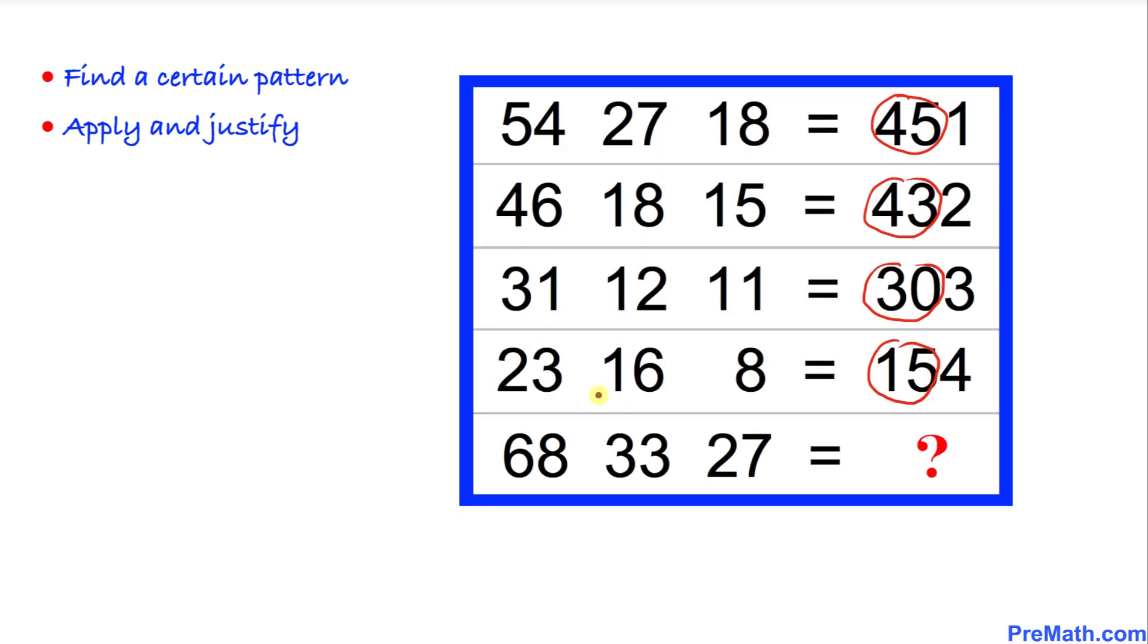Now let's focus on this very last row and we are going to use the same analogy. We are going to subtract 68 minus 33, which is going to give us 35. Then we are going to add this 27 to get 62. So these first two digits are going to be 62.